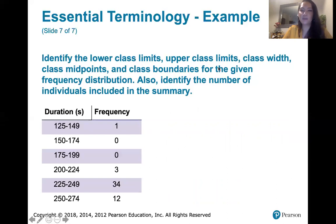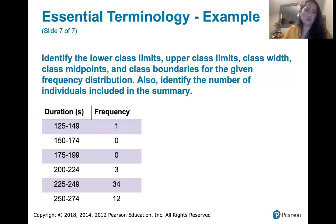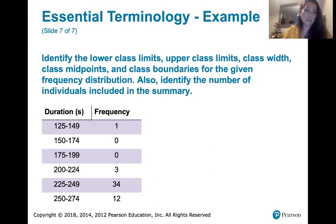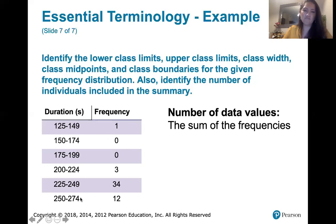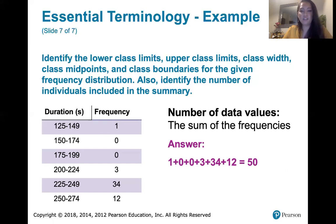We're asked to identify the number of data points included in the study. You could go back to the original data set and count them, but if you have a frequency distribution, I'd recommend just adding the frequencies: 1 plus 0 plus 0 plus 3 plus 34 plus 12, which is 50. So there were 50 eruptions included in this frequency distribution.